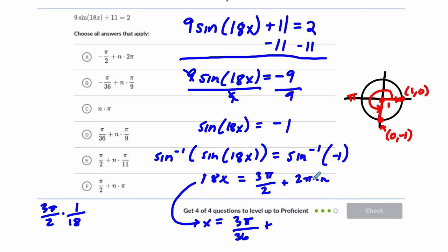And plus, divide this by 18, so that's 2 pi over 18 times n. But these two fractions reduce. So right here, this is going to be 3 over 36 is the same as 1 over 12. And this is the same as 1 over 9. So we're looking for pi over 12 plus pi over 9n.